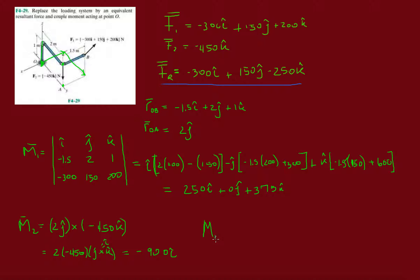So now my resultant moment that I'm going to tag on to O is M1 plus M2. So let's do i's with i's, j's with j's, and so on. Over here we have minus 900, so minus 900 plus 250 is minus 650.